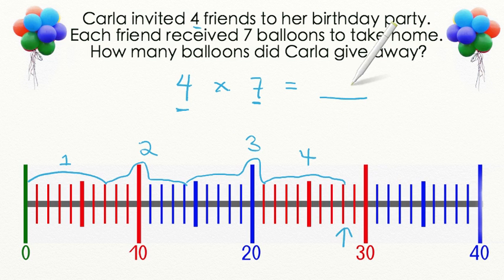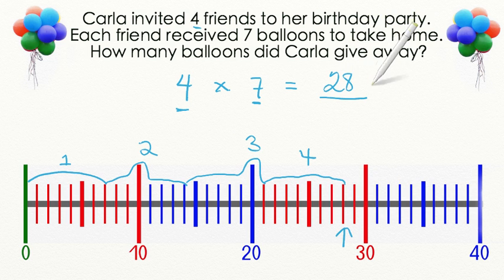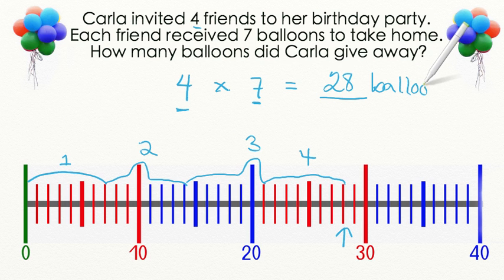That's our fourth group. That gets us to 25, 26, 27, 28. That means that Carla gave away 28 balloons at her birthday party. Great job!